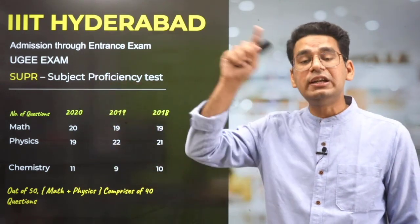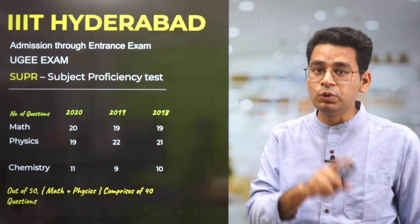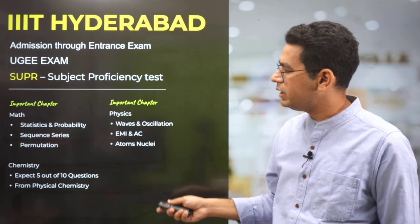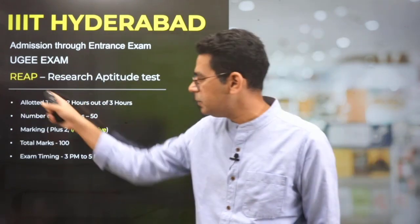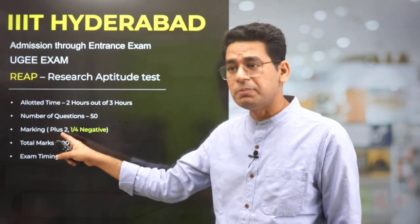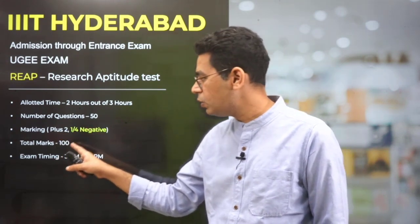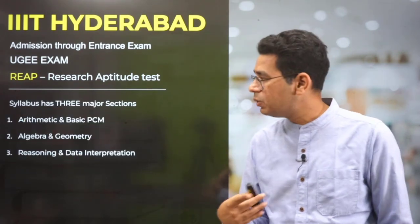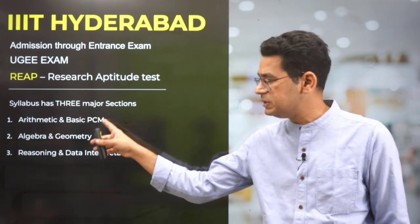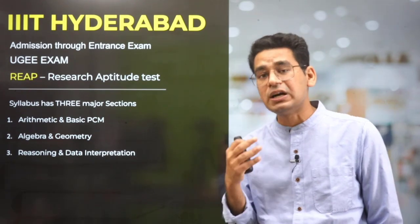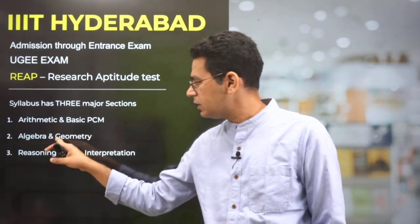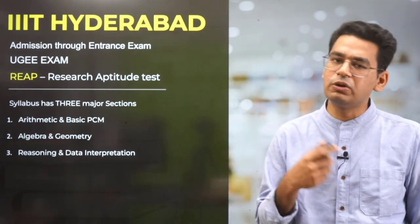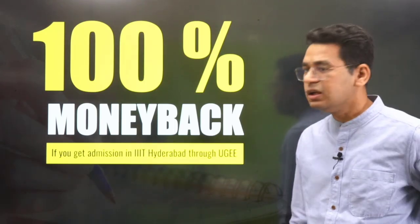This analysis is available in the detailed video I have already created. I am just giving you an idea of what we are going to give you. In REAP, there are 50 questions, but the marks are plus 2 and minus 1/4 — that means 100 marks positive and 50 negative, totalling 150 marks. You are given 2 hours. What is covered in REAP? Arithmetic and basic PCM, very similar to what is asked in the CAT examination — algebra, geometry, reasoning, data interpretation, and linguistics.